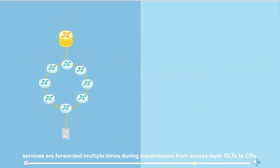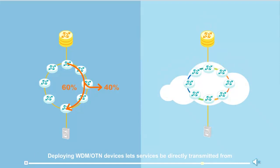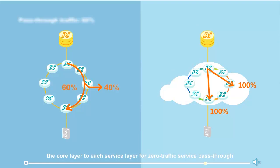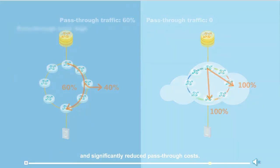On current networks, services are forwarded multiple times during transmission from access layer OLTs to core routers. Local traffic occupies only 40 percent of the total traffic, with the remaining 60 percent being pass-through traffic. Deploying WDM and OTN devices lets services be directly transmitted from the core layer to each service layer, achieving zero traffic pass-through and significantly reducing pass-through costs.